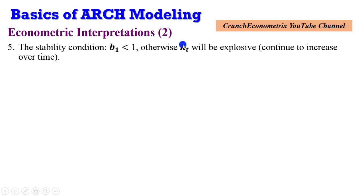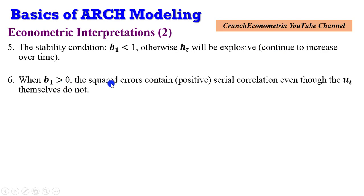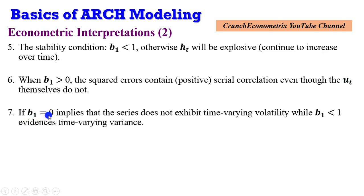Otherwise, Ht will be explosive — that is, it will continue to rise over time. Beta-1 must also be positive. The squared errors contain positive serial correlation, even though the errors by themselves do not. If beta-1 equals 0, it implies that the series does not exhibit time-varying volatility, while beta-1 less than 1 evidences time-varying variance. Beta-1 must not be greater than 1, so it should lie between 0.1 and 0.9.